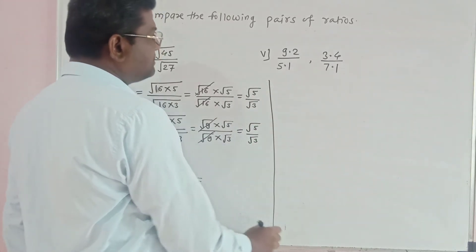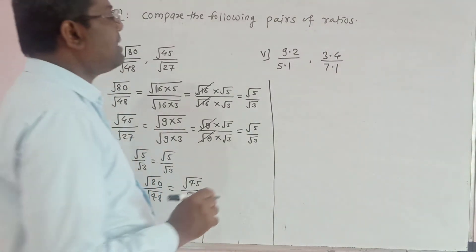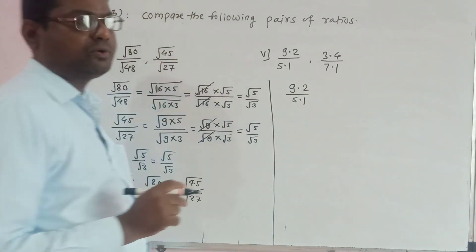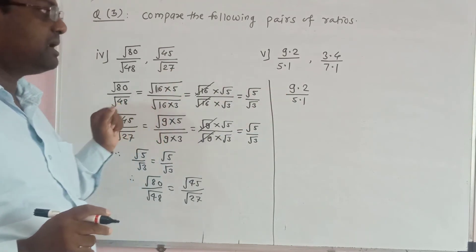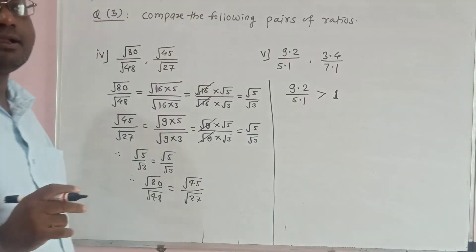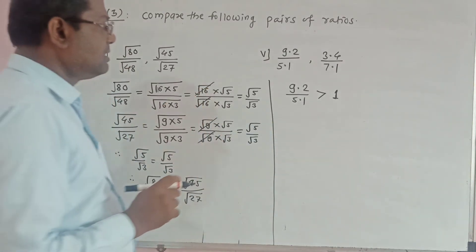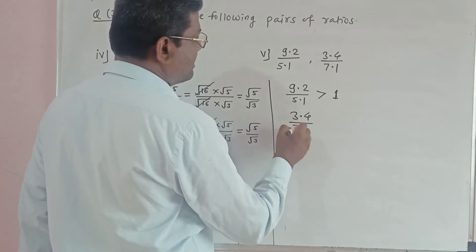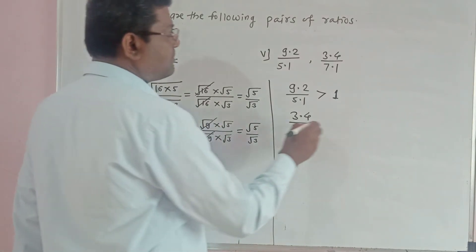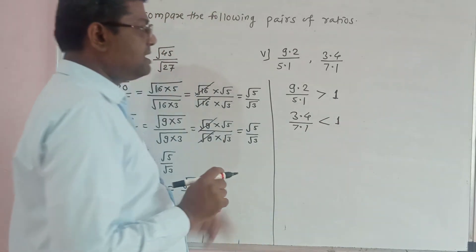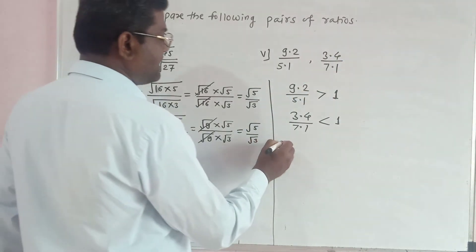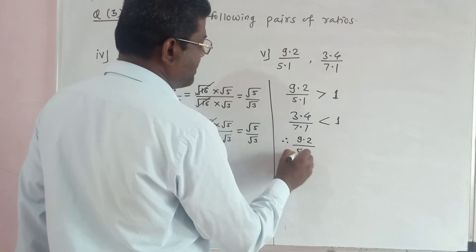Example number 5: compare 9.2 upon 5.1 versus 3.4 upon 7.1. In 9.2 upon 5.1, the numerator is greater than the denominator, therefore this ratio is greater than 1. In 3.4 upon 7.1, the numerator is less than the denominator, therefore this ratio is less than 1. Since one ratio is greater than 1 and the other less than 1, therefore 9.2 upon 5.1 is greater than 3.4 upon 7.1.